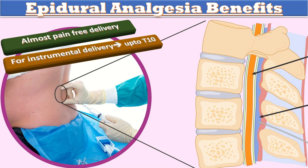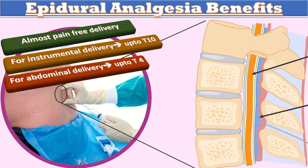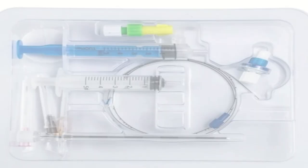What are the benefits of epidural analgesia? First, almost pain-free delivery. Second, it is used for instrumental delivery — a top-up can be tailored for sensory blockade up to T10 while motor power of abdominal muscles is retained, so bearing down can be instituted with contractions. Third, for abdominal delivery, a top-up can provide abdominal muscle relaxation and sensory blockade up to T4 level.